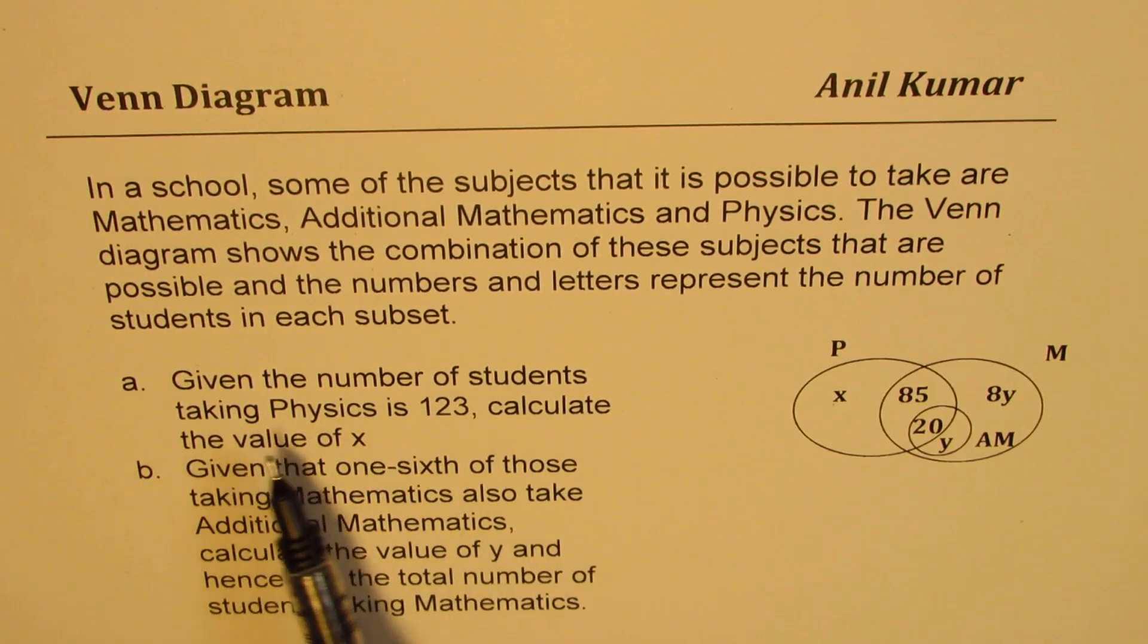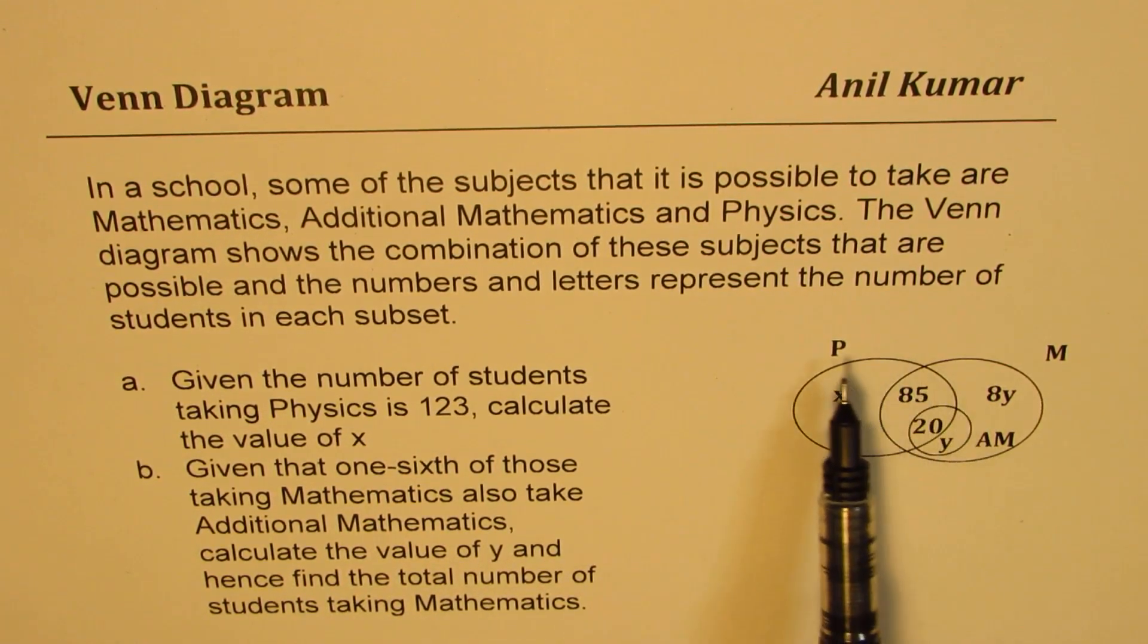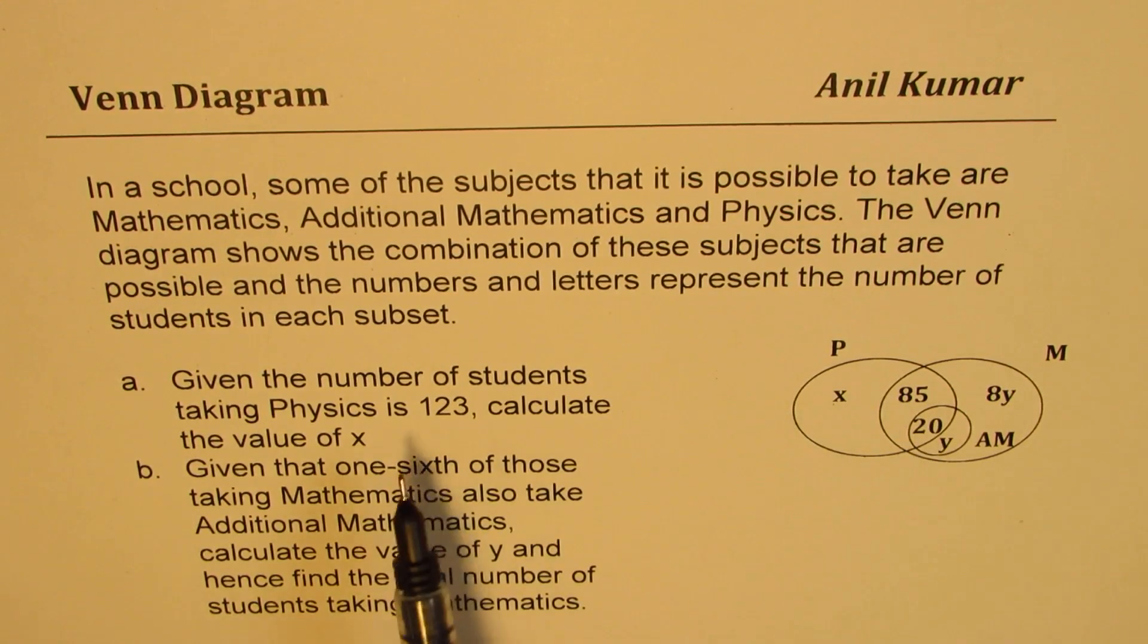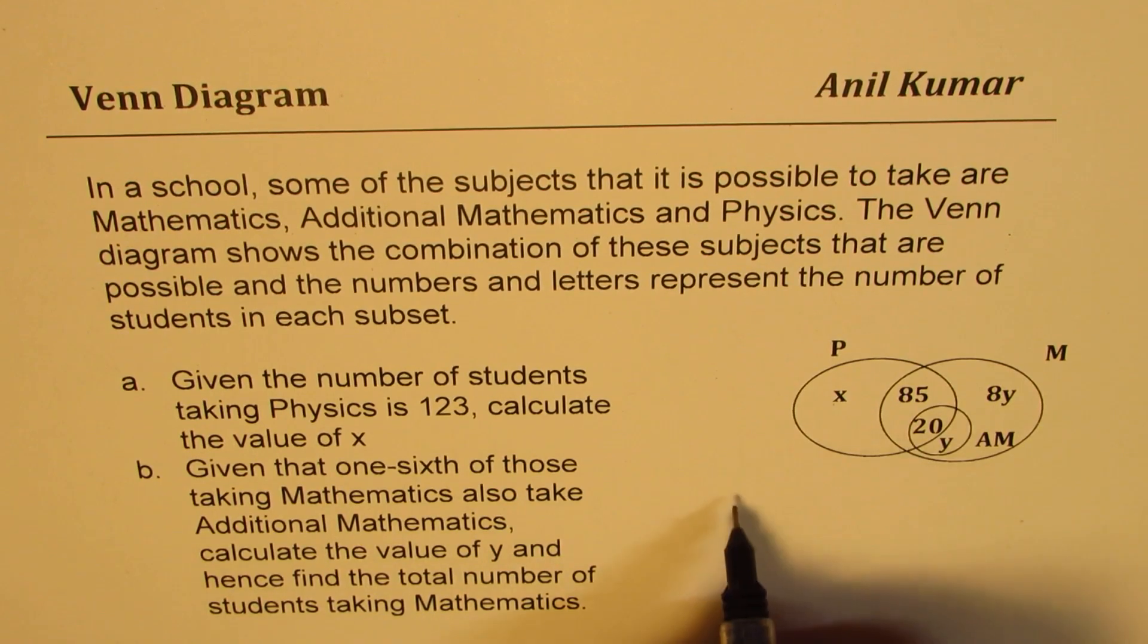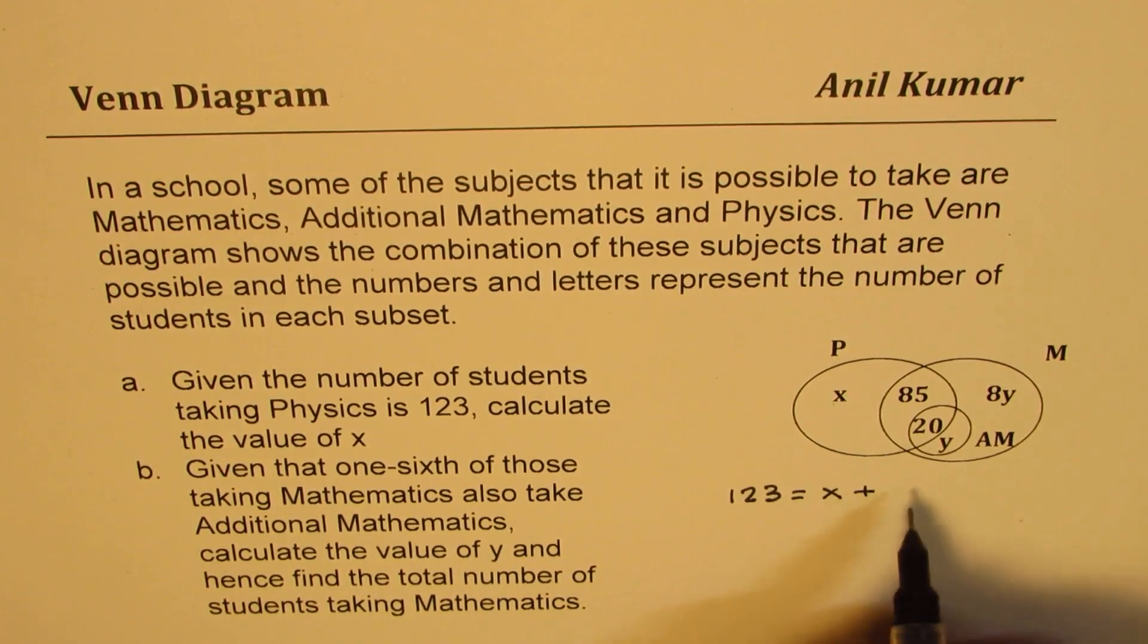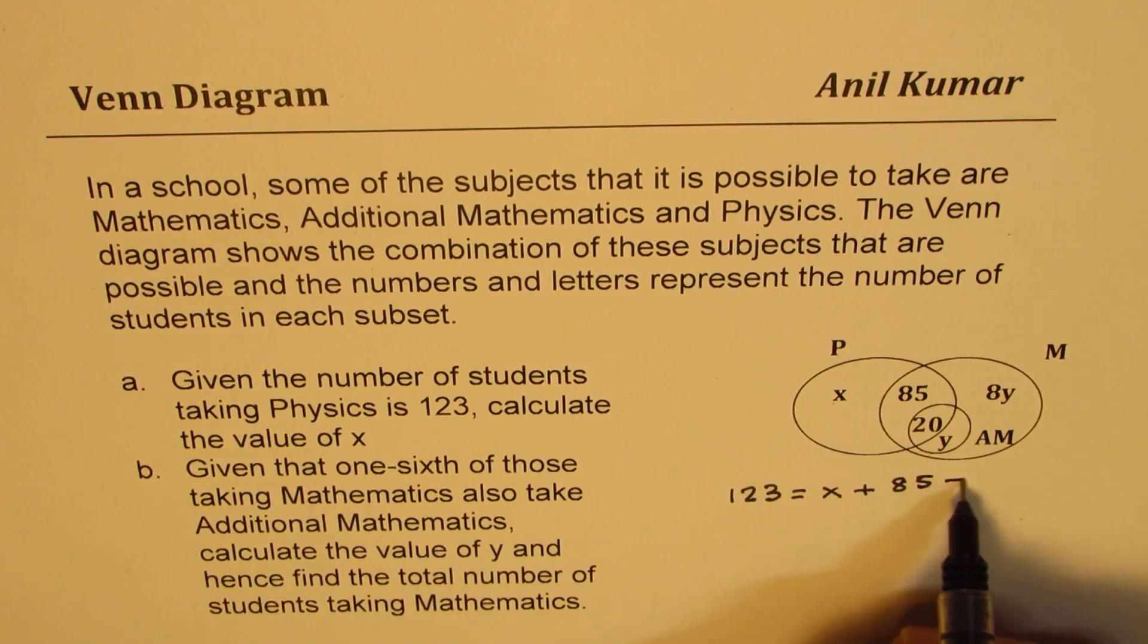given the number of students taking physics is 123. So this big circle includes 20, 85 and X and their sum should be 123. Correct? So from the Venn Diagram, we know 123 should be equal to X plus 85 plus 20.